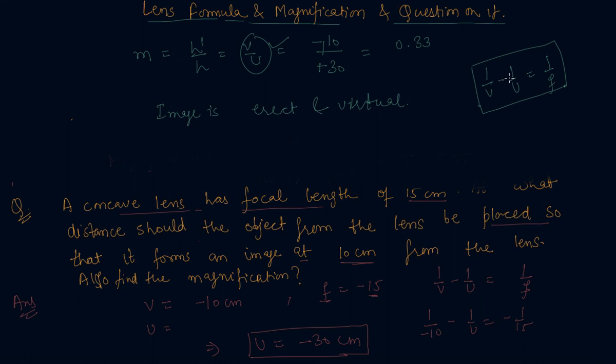So be attentive there. Whenever you are using the formula of lens formula and the mirror formula, for mirror it is 1 by V plus 1 by U equal 1 by F. So students kindly note that here is a positive sign and here it is negative sign. Don't confuse between these two formulas.